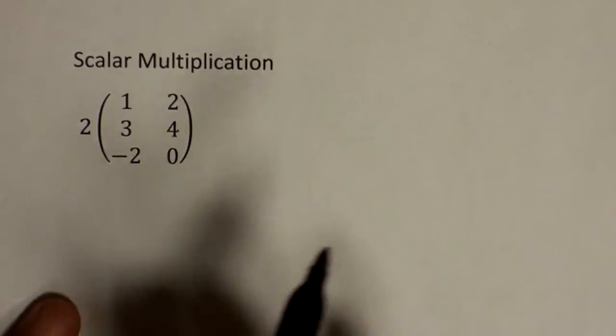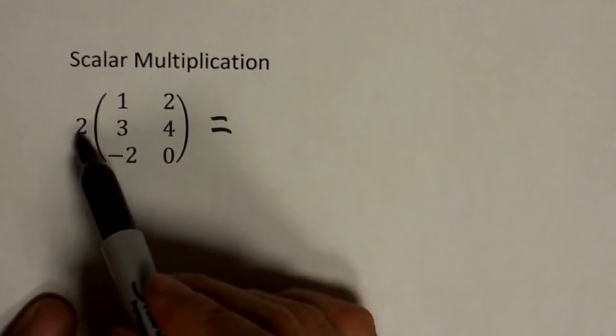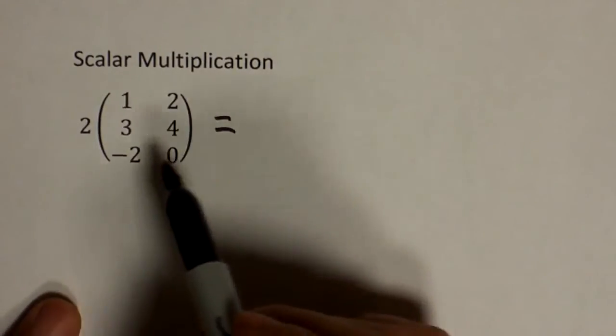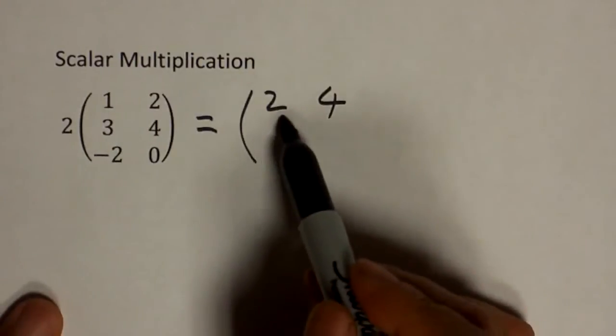Scalar multiplication means you have a number in front of the matrix, and you just multiply this number to each of the elements. You have two times one, two times two, two times three, two times four.